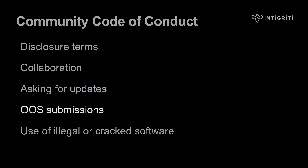Out-of-scope submissions: the strict scope definition exists for legal, practical, fairness, and focus reasons, but researchers may use the ask-a-scope question for clarification. If researchers inadvertently find an out-of-scope bug, they may report it but should not expect a bounty. It goes without saying that Integrity expects ethical behavior from the community, including using licensed software.